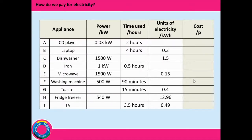How well did you do? CD player: 0.06 kilowatt-hours. Laptop: 0.07. Dishwasher: 1. Iron: 0.5.